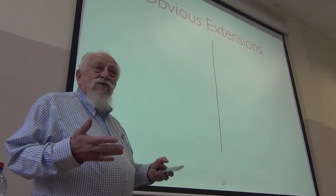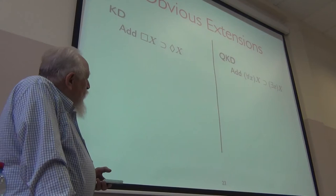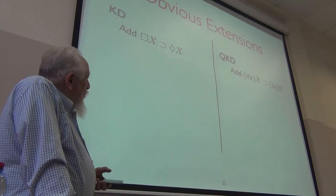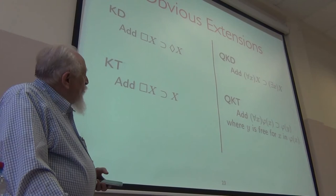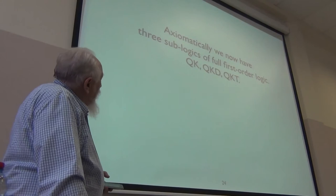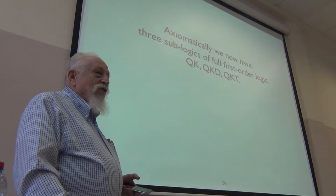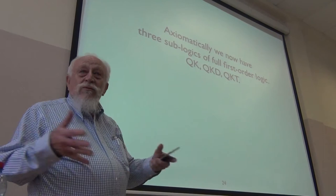Before we get to semantics, there are some obvious extensions. Starting with modal K, you can build up to D, T, K4, and so on. For quantifier analogs: QD adds for-all implies exists to QK. QKT adds instantiation — for-all x phi(x) implies phi of anything free for x. Axiomatically, we've got three subsystems of classical logic. We know they are subsystems, but we don't yet know they're proper extensions — for that we need to prove some unprovability results.